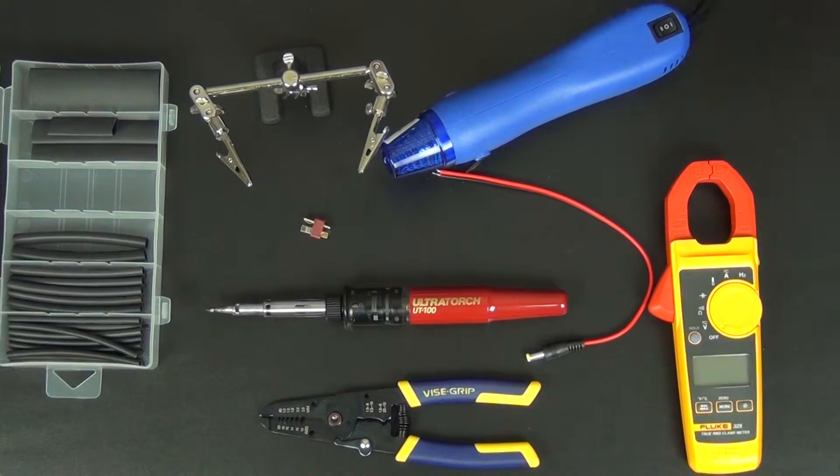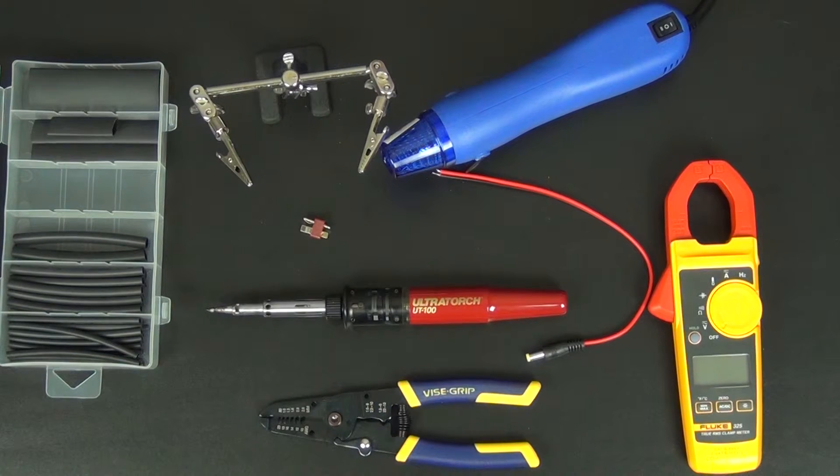The other thing that we'll be using is our Fluke multimeter. We're actually just going to be using it for resistance, and the resistance is going to tell us if we've in fact created a good connection between the units. And we'll test it at the end.